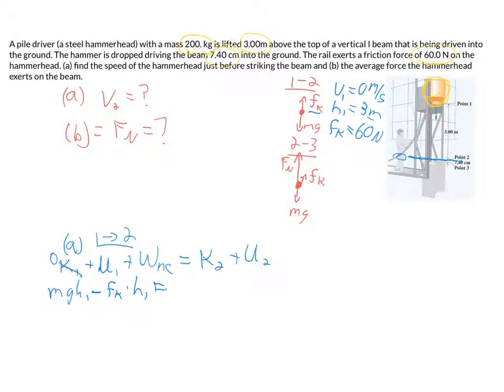That's going to be equal to our final kinetic energy, V2, which we don't know. That's what we're trying to find. So that's 1/2 M V2 squared. Plus, do we have any potential energy? We already said that H2 is 0, and there's no springs or anything else, so this is also 0. So this is actually quite simple. All we want to do is we want to solve for V2.